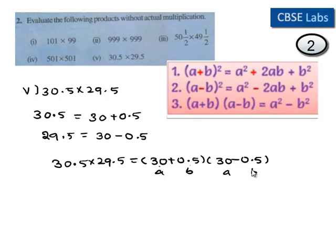From the third identity, a plus b times a minus b is equal to a square minus b square, where a is equal to 30, b is equal to 0.5.